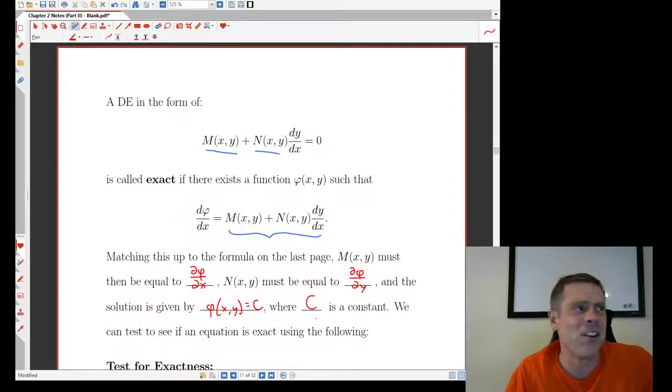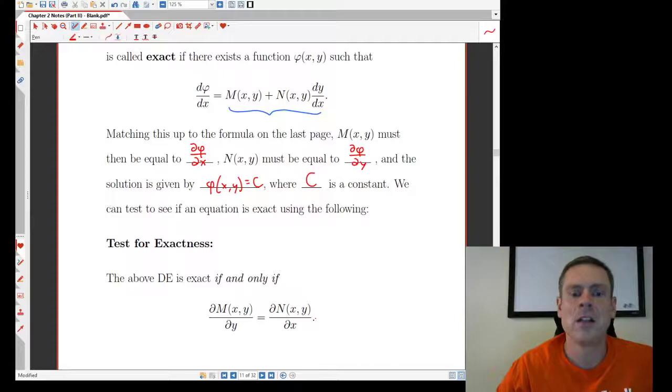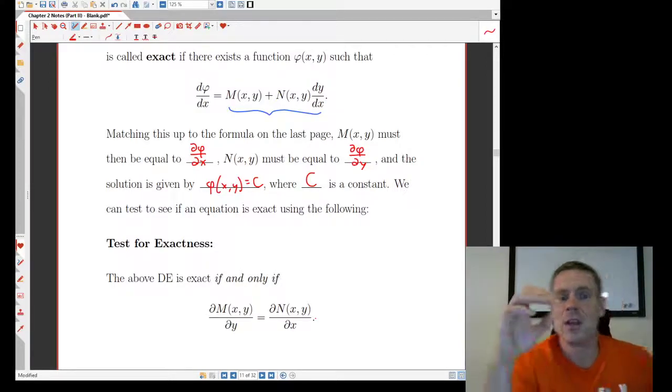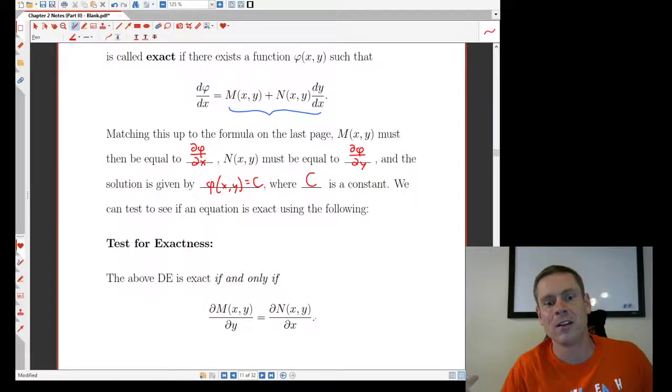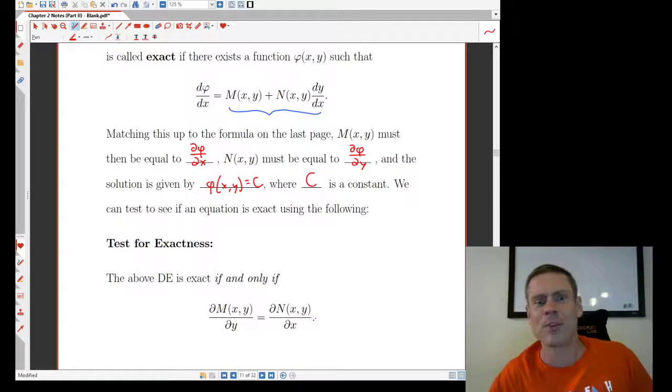As I said, it's tough to know when this is true, right? It's easy to say, oh, it's exact if this is true. But luckily, there is a test to see if an equation is exact. And it's this. So if we look at the bottom of the page here, the test says this. A differential equation is exact if and only if you take the M and its y derivative is the same as the x derivative of N. So the y derivative of the M has to be equal to the x derivative of the N.